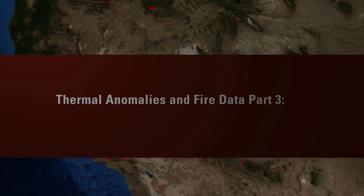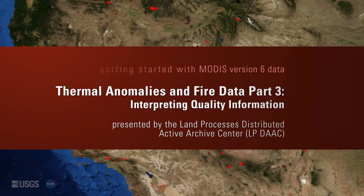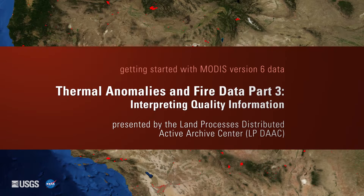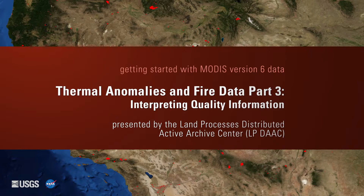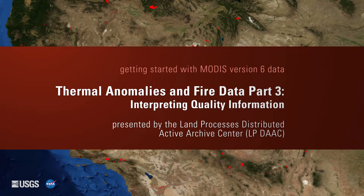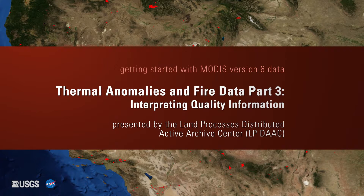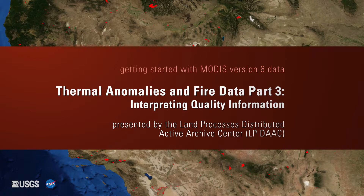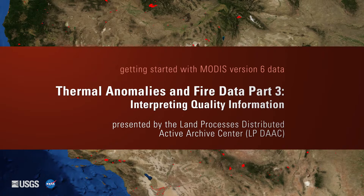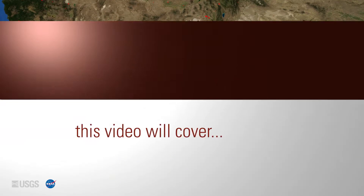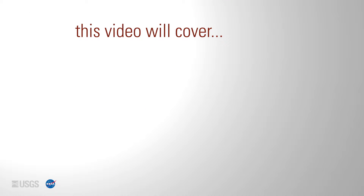Getting Started with MODIS Version 6 Thermal Anomalies and Fire Data, Part 3: Interpreting Quality Information, presented by the Land Processes Distributed Active Archive Center, or LPDAAC. This is Part 3 of the Getting Started with MODIS Version 6 Thermal Anomalies and Fire Data Video Series. This video will cover the quality information associated with thermal anomalies and fire products.